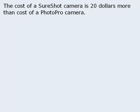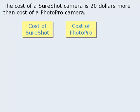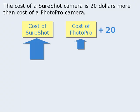We are told that the cost of a SureShot camera is $20 more than the cost of a PhotoPro camera. What sort of word equation can we write using the cost of the SureShot and the cost of the PhotoPro? The cost of the SureShot is $20 more than the cost of the PhotoPro, so if we add $20 to the cost of the PhotoPro, then the left-hand side equals the right-hand side, giving us our desired equation.